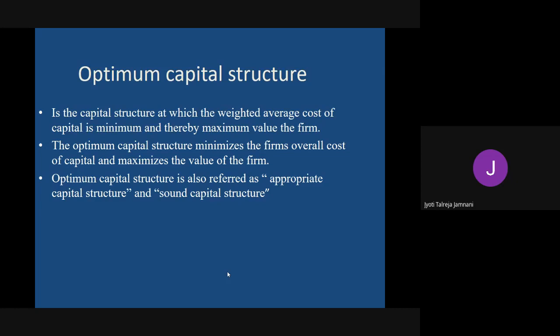Which combination is good - 50:50, 60:40, 30:70? Nobody knows, and that is what we are going to study as optimum capital structure. How do we decide what is optimum? You have to find the cost of equity and the cost of debt, then combine them in such a way that you have minimum cost and maximum possible value.